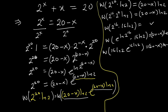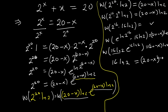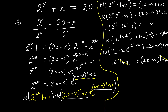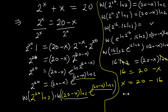So what is here and what is there are now equal. When we take the Lambert W function, we get 16·ln 2 equals (20−X)·ln 2. The ln 2 cancels on both sides, giving 16 equals 20 minus X, therefore X equals 20 minus 16, so X equals 4.